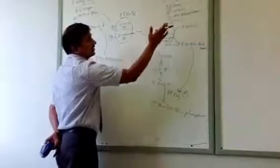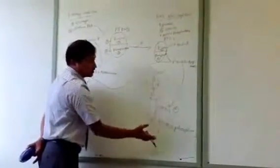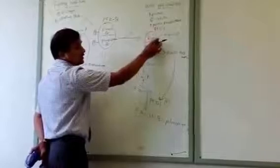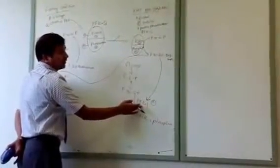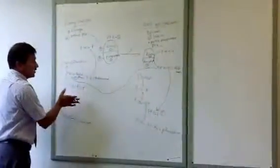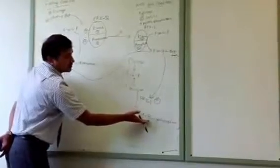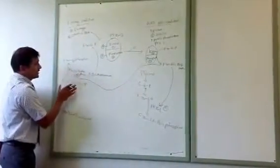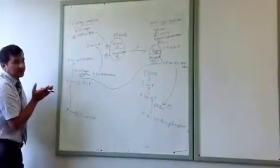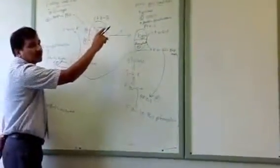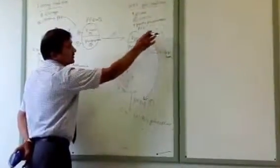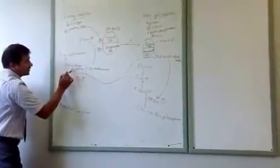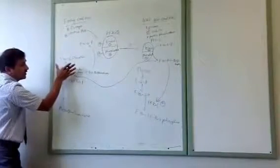In well-fed condition, glucose is plenty and must go through glycolysis. Fructose 2,6 bisphosphate — increased by PFK2 kinase under insulin — activates PFK1. At the same time, it must inhibit the reverse reaction, because if fructose 1,6 bisphosphatase is not inhibited, it would always convert fructose 1,6 bisphosphate back to fructose 6 phosphate. So the high concentration of fructose 2,6 bisphosphate negatively influences fructose 1,6 bisphosphatase and keeps the reverse reaction inactive.